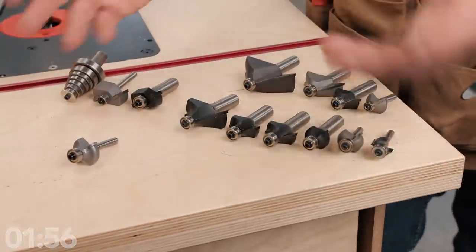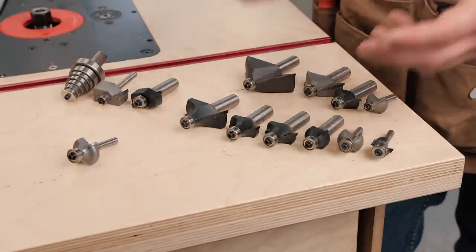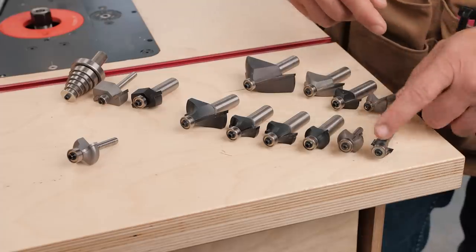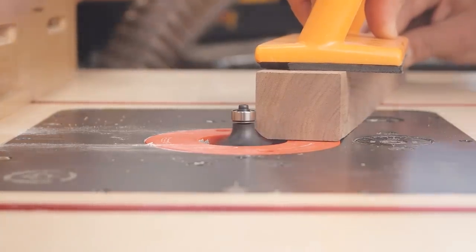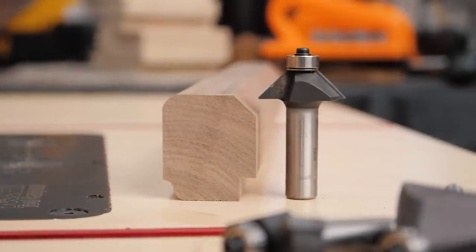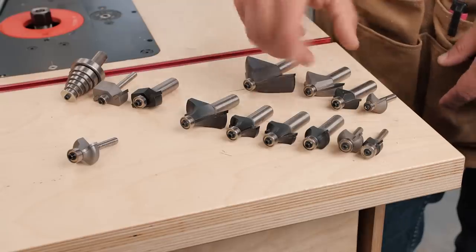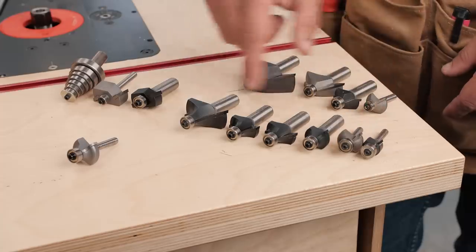Edge profile bits are exactly that, they are for profiling your edges. You can see there's a profiled edge here. We use this eighth inch round over. That's my most used bit. Round overs of course are my most used along with chamfer bits. So these cut at a 45 degree angle, these do a round over of varying sizes. This is an eighth of an inch, this is one inch.